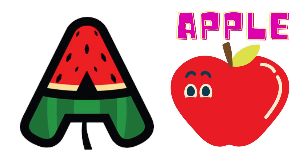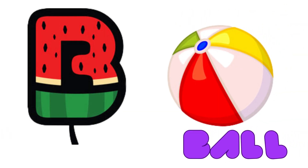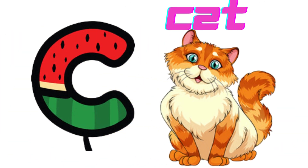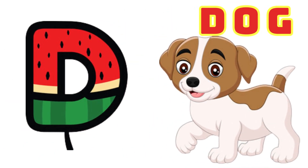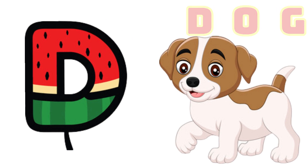A is for Apple, A-A-Apple. B is for Ball, B-B-Ball. C is for Cat, C-C-Cat. D is for Doll, D-D-Doll.